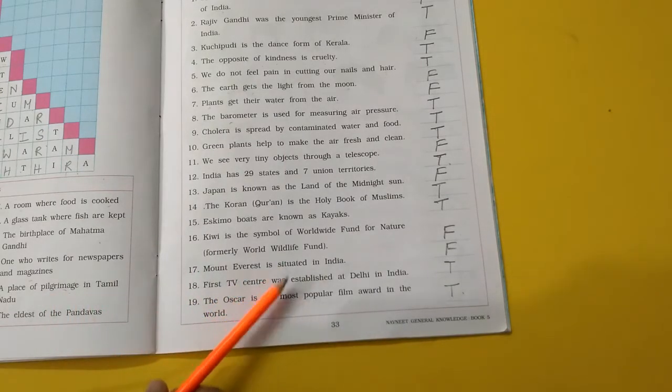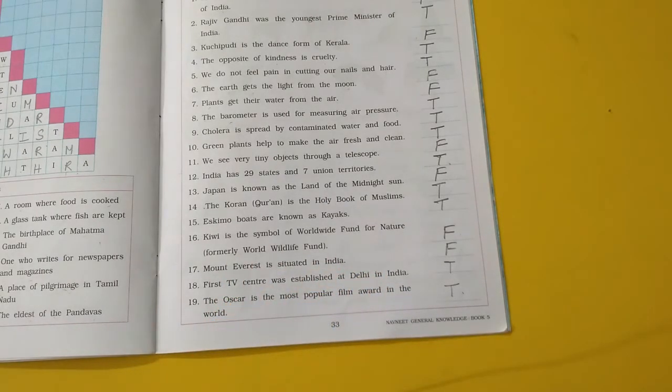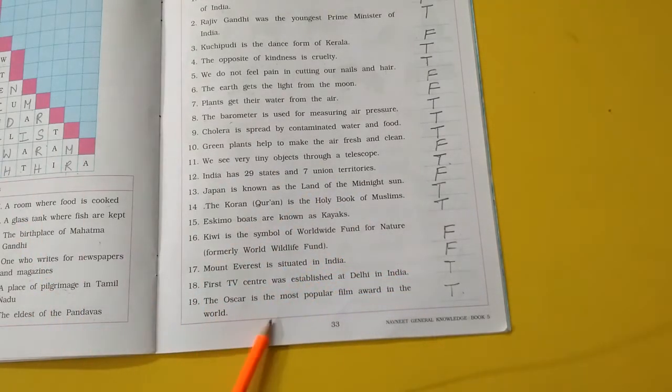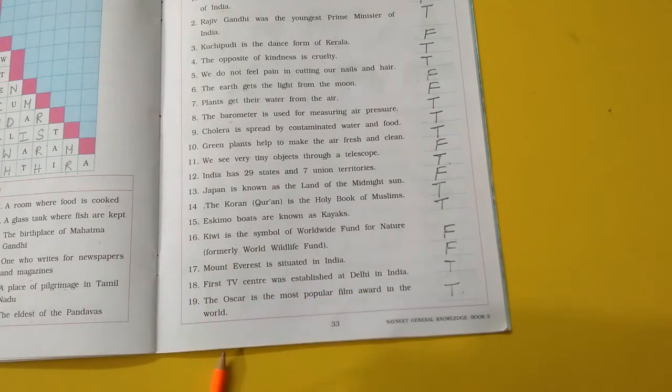First TV center was established at Delhi in India. Pehla TV center hai wo Delhi mein sthaapit kiya gaya tha. True. The Oscar is the most popular film award in the world. Puri duniya mein Oscar award jo hai wo most popular award bataya jata hai, most famous award bataya jata hai. That is true.